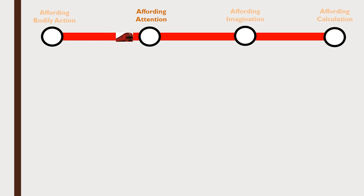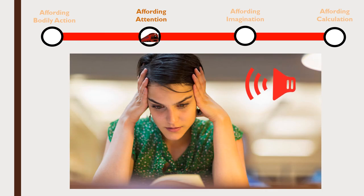The first example I look at is affording attention, and my case revolves around the following example. Imagine you're working hard on a philosophy paper in the library, but someone on the table next to you has their music turned up too loud. I want to say that the music affords attention — more specifically, it presents a soliciting affordance for us to focally attend. This is an invitation to attend that we're free to ignore; we might succeed in keeping our attention trained on our work, but this affordance is nevertheless a feature of our visual experience.